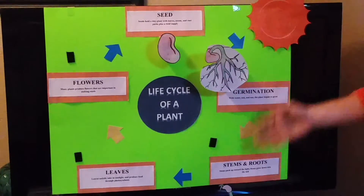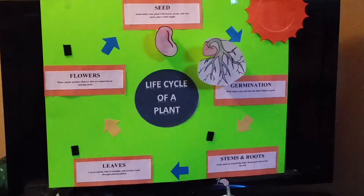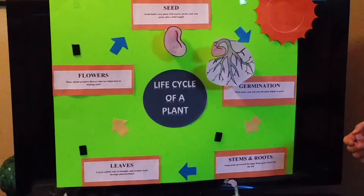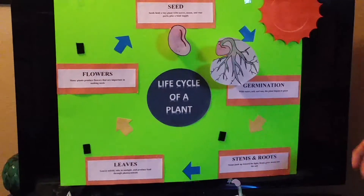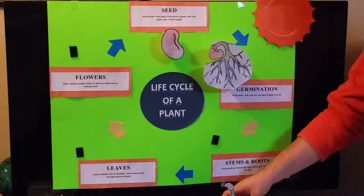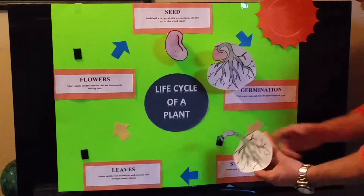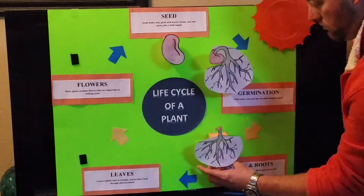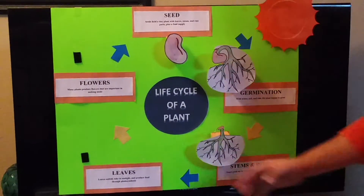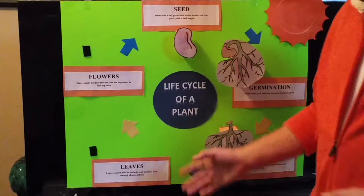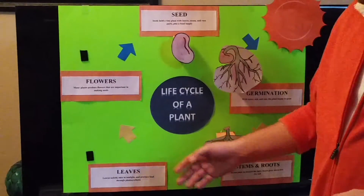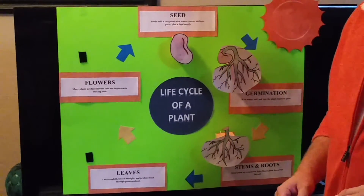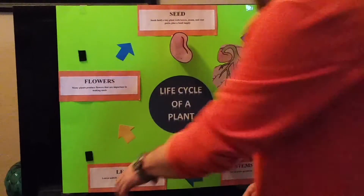That continues on to stems and roots, where the stems push up towards the light and roots grow down into the soil. Continuing on, leaves unfold, take in sunlight, and produce food through photosynthesis.